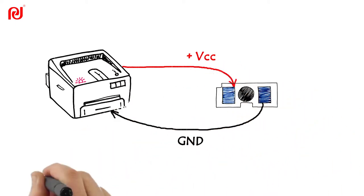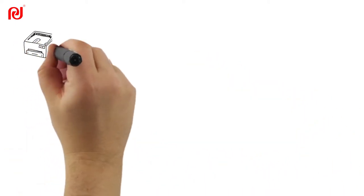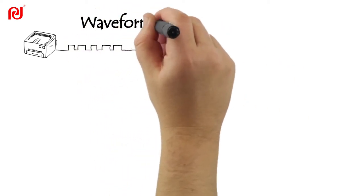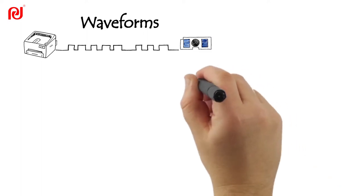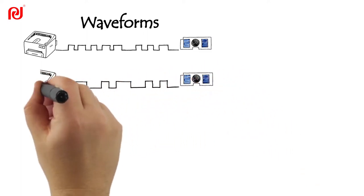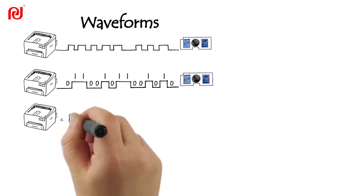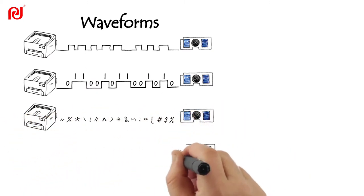Printer generates waveform signals with inquire commands which are transferred to consumables chip via terminals or antenna. The chip decodes the waveforms to digital 0 or 1, interprets them as instructions. After some internal processing, consumables chip will feed back to printer by corresponding waveforms.